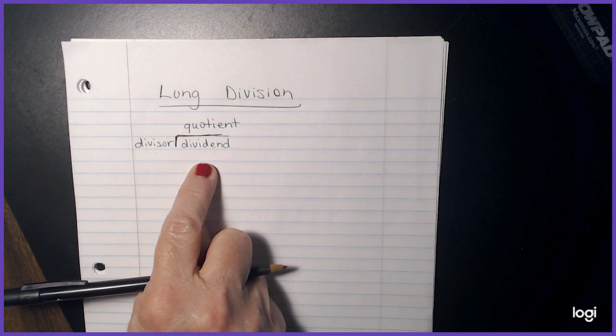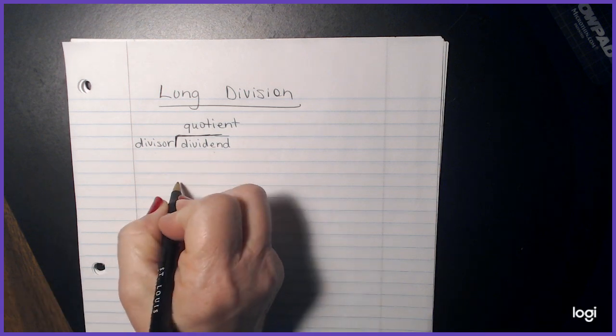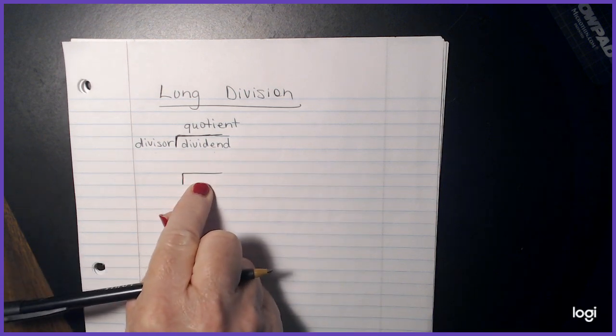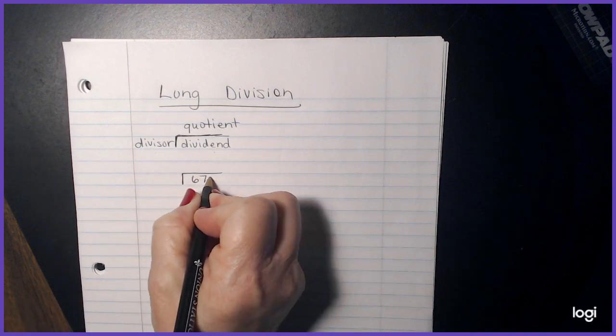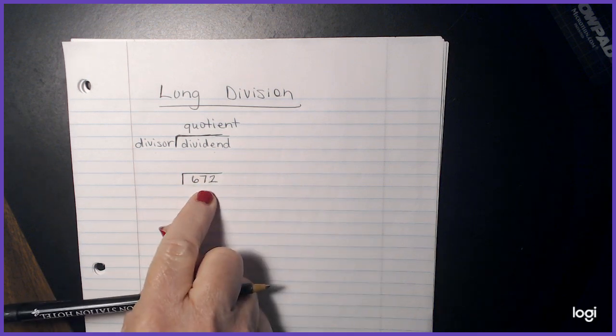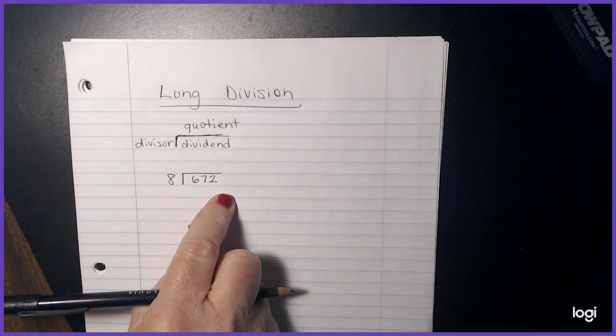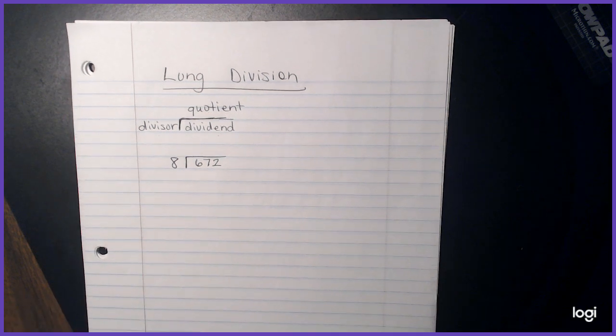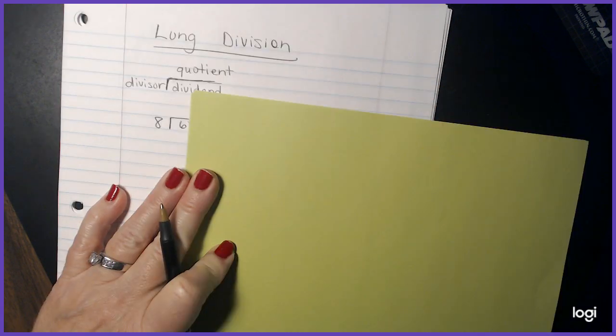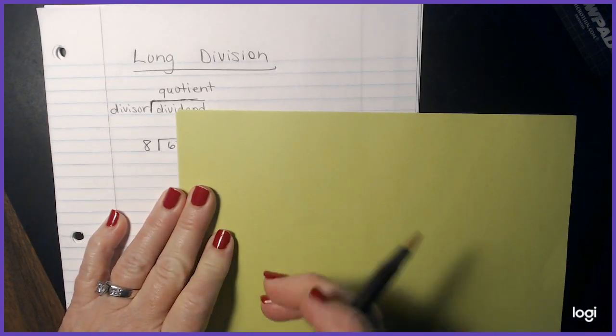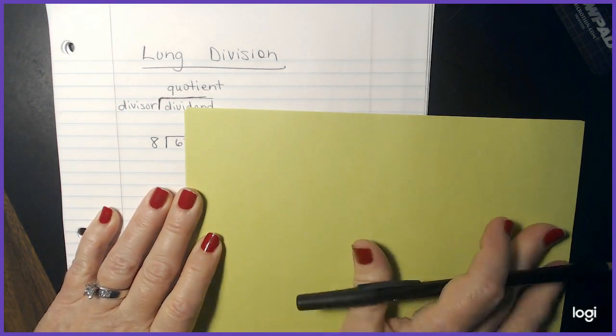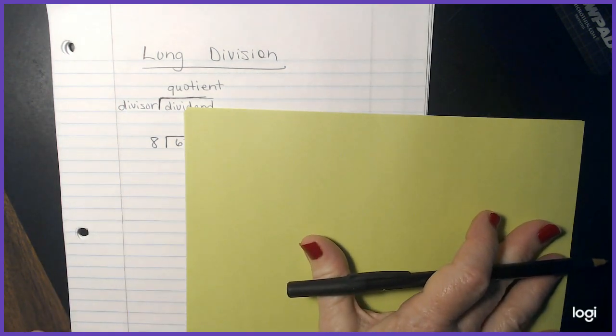So for example, I could put here as my dividend, I could put the number 672. And as my divisor, I could put it as eight. Now my job now is to find the quotient. In order to keep things kind of uniform here and my numbers lined up, I sometimes will take a piece of paper to help cover things up to make it nice and easy for me.